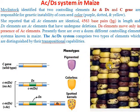If there is a functional C gene, then the kernel is purple. If the C gene is non-functional, then the kernel will be colorless or yellow.